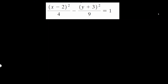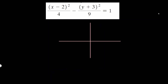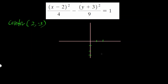Let's draw the x-y axis first. We need to find where the center is. The center is at (2, negative 3). You have to look at this, set it equal to 0, set it equal to 0, and solve for x and y. That's going to be the center.